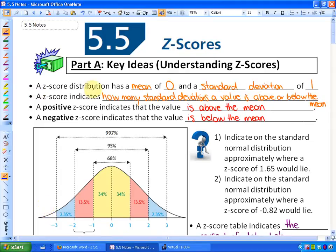So what a Z-score distribution has is a mean of 0, so the average is 0, and a standard deviation of 1. So all the standard deviations, just add one or subtract one.